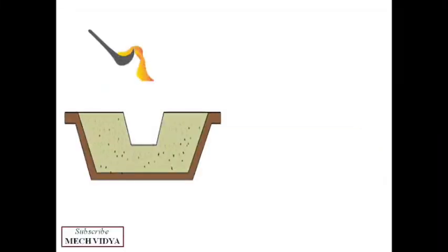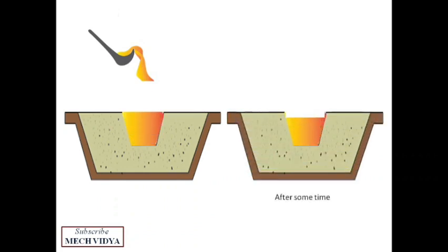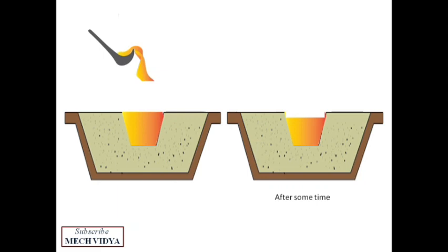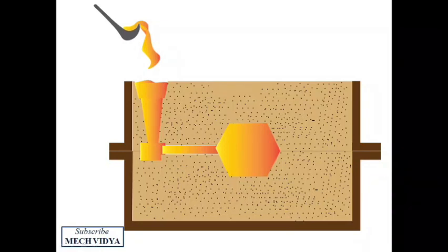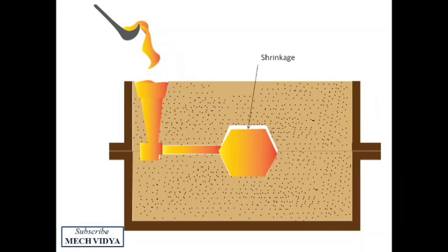Suppose if I pour some molten metal in a mold cavity, then after solidification this metal will start to shrink. This is a characteristic property of all metals. So if we pour molten metal in the gating system, it will fill the entire mold, but soon during and after solidification the cast metal in the mold will start to shrink. The percentage of shrinkage depends on the material's coefficient of thermal contraction.